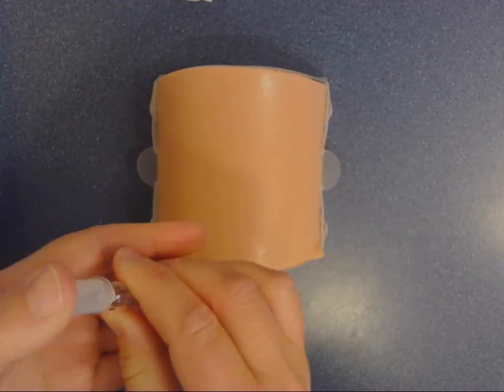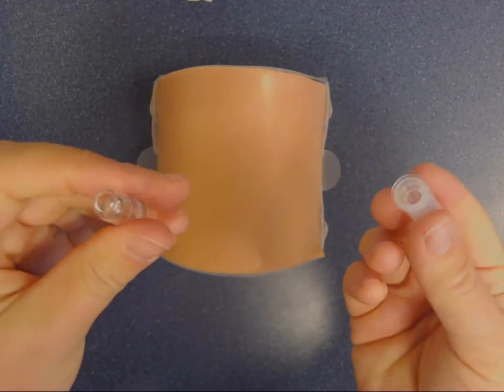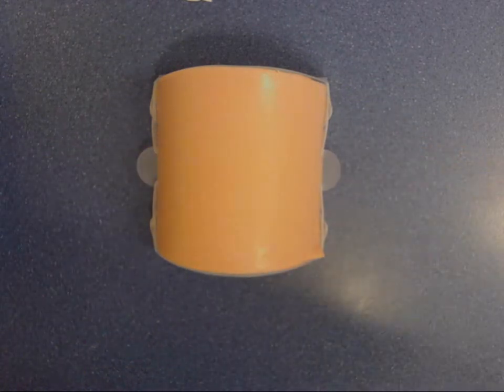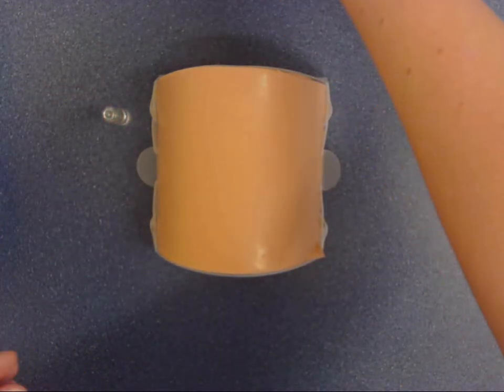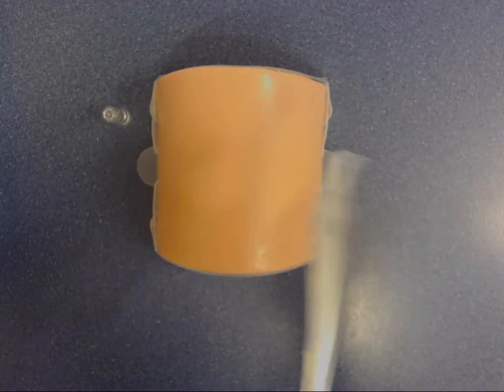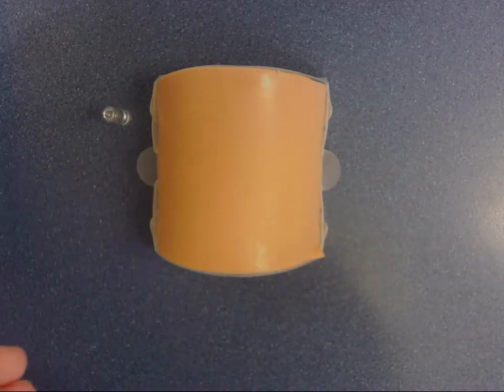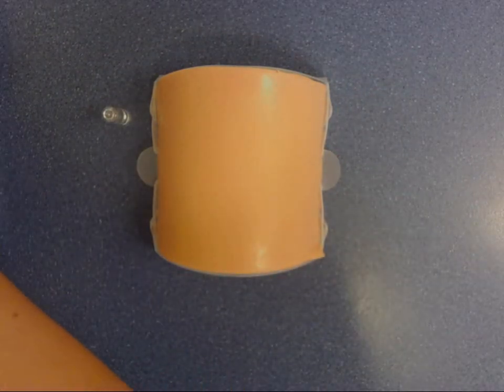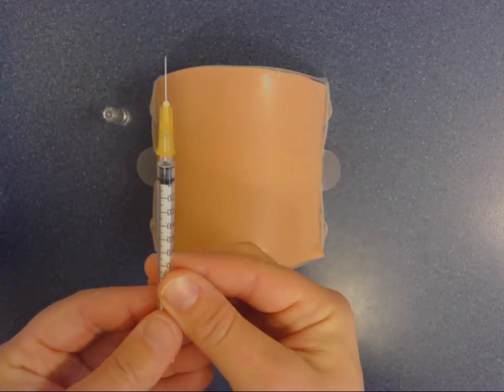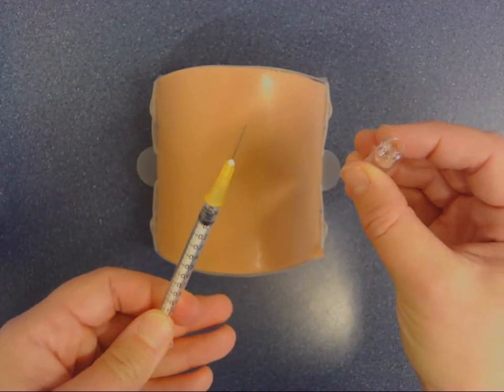I'm just going to prep the drug. Snap the top off with an ampoule snapper. Pop that in the sharps bin. I've got my one mil syringe. I've got my needle that I've just opened. And I'm going to draw up my drug.